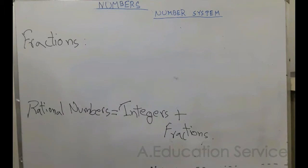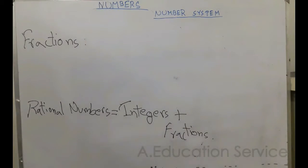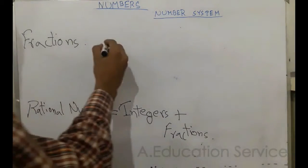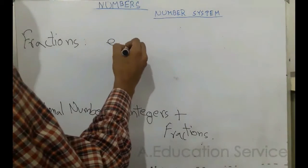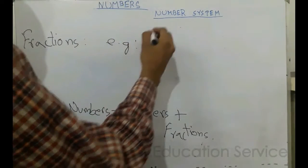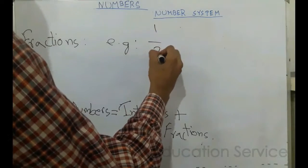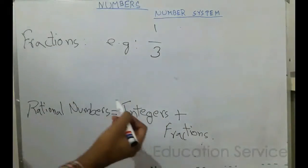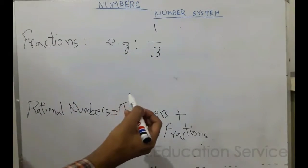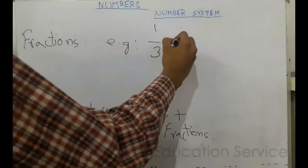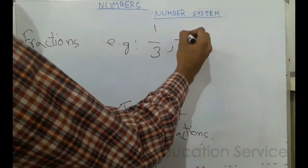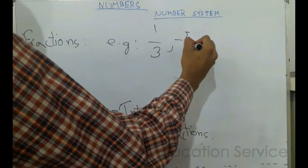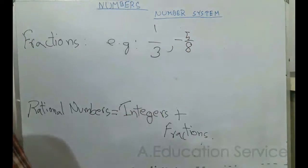Fractions are numbers that can be written as ratios of two integers. For example, one over three is a fraction, and minus five over eight is also a fraction.